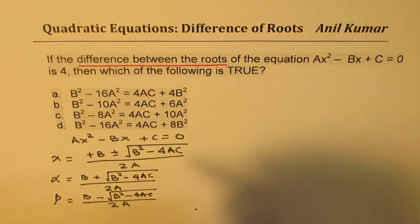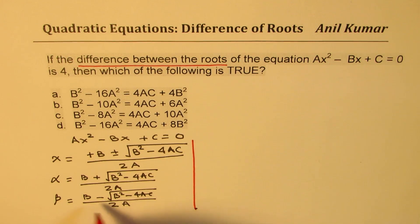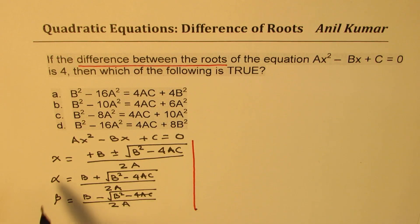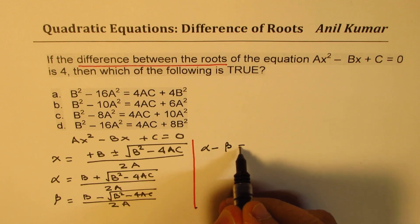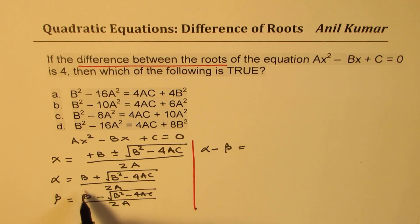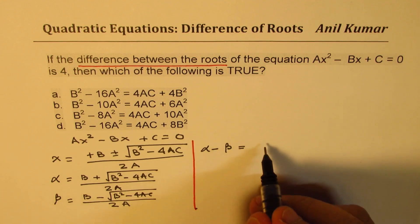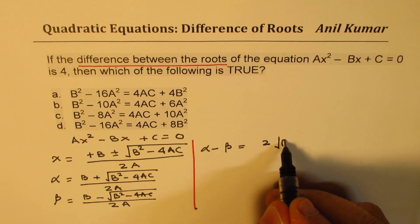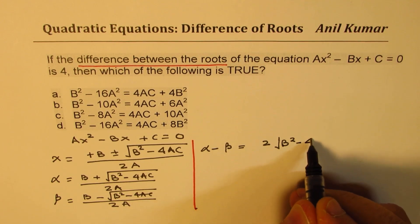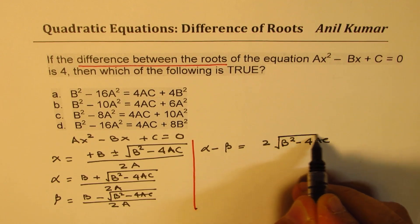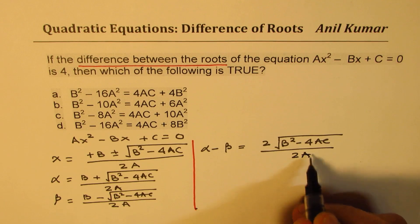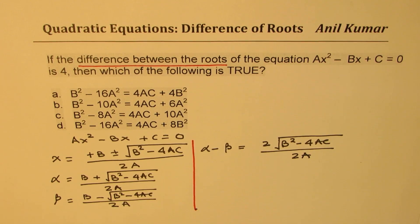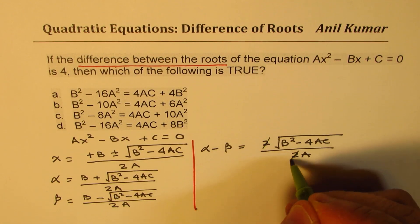Now let's look at the difference of these roots. What is α - β? If I do this minus this, the b terms cancel, and they become twice: 2√(b² - 4ac) divided by 2a. This can be simplified - we can cancel the two.